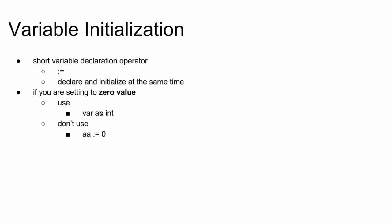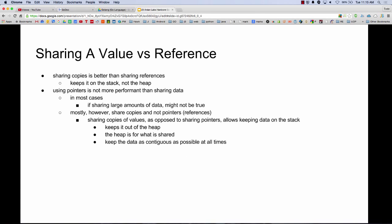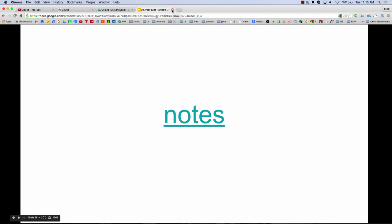He also said to make sure that when you are doing variable initialization, always use a short variable declaration operator — that's going to be in the function — unless you are setting a zero value, in which case you want to use var. Just stick with those two methods. There are a couple of other ways to declare and initialize variables, but that's one of Go's warts. No language is perfect, and that's one of the areas he thinks is a wart. The best way to approach variable declaration initialization is always use shorthand unless you're setting things to zero value.